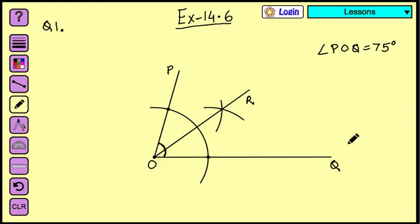Angle POQ is divided by this OR line. This is the line of symmetry because it is dividing this whole angle into two equal parts. You can write it down: OR is the line of symmetry of angle POQ.